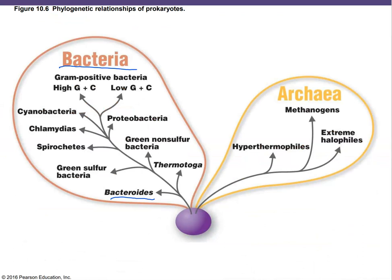Now let's take a look at the phylogenetic relationship among the prokaryotes. We have two domains: the Archaea and the Bacteria. Starting with the Archaea, there are three branches: the hyperthermophiles that like extra-hot conditions, the methanogens that produce methane gas, and the extreme halophiles — the salt lovers.